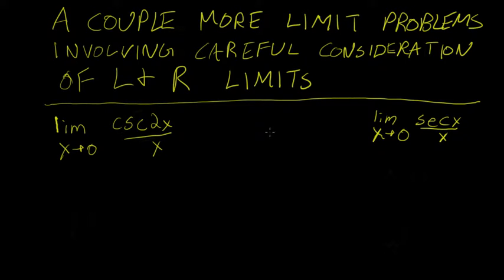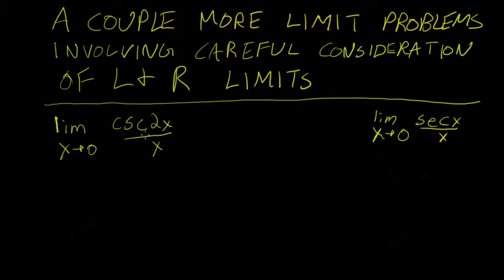In this video we're going to be working a couple more problems involving careful consideration of left and right limits. This is the first one we're going to attack: the limit as x tends to 0 of cosecant of 2x over x.